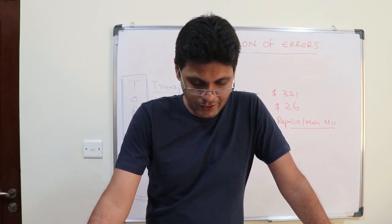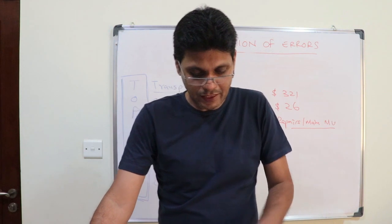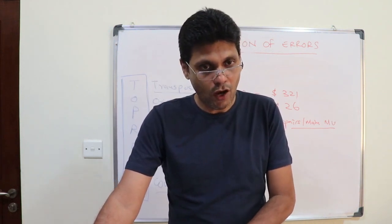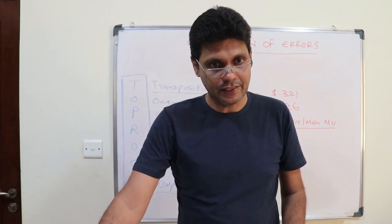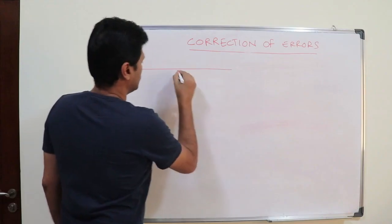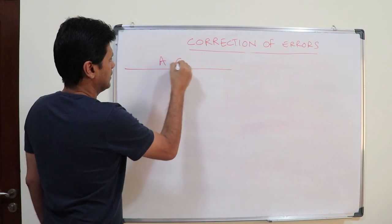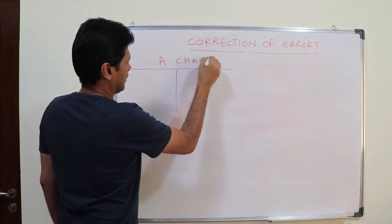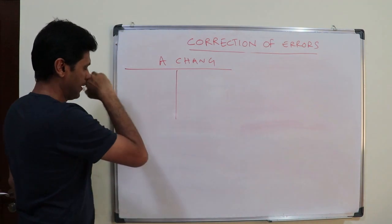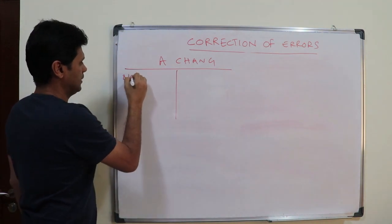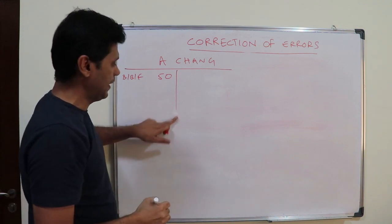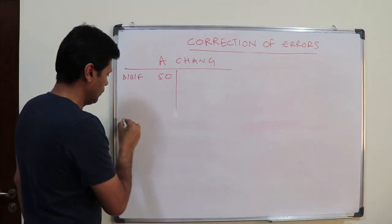So what is the type of error? Error of commission. This particular error is known as an error of commission. So how do you correct this entry? A Chang has an outstanding balance — let's say balance brought forward fifty dollars — and now he has paid.